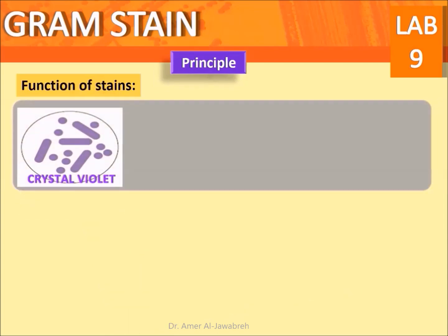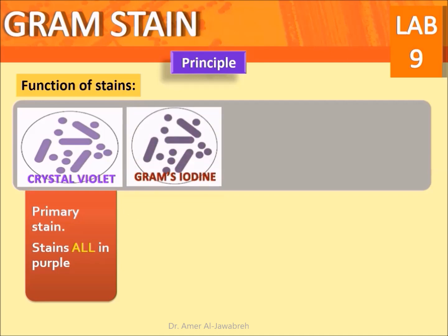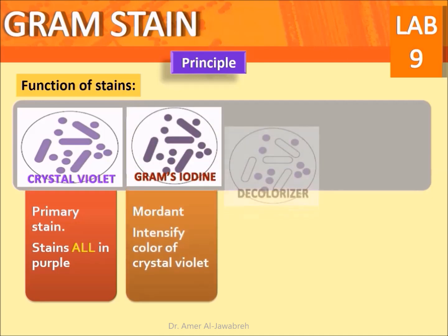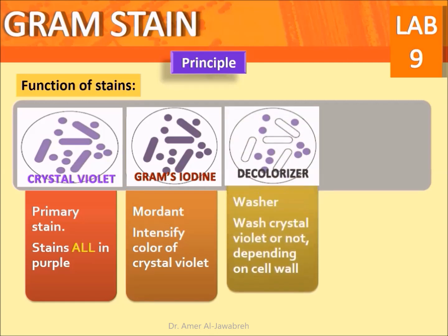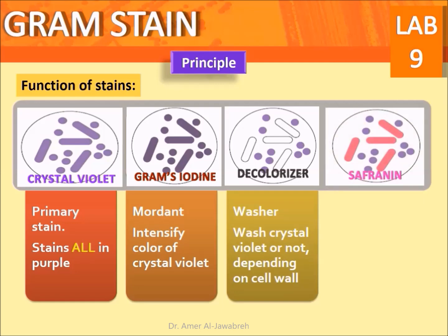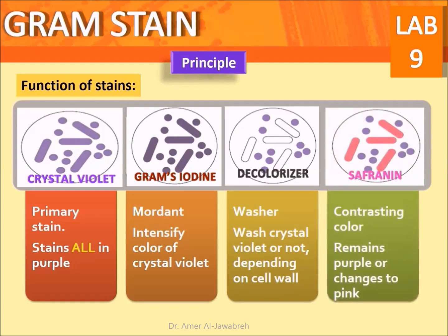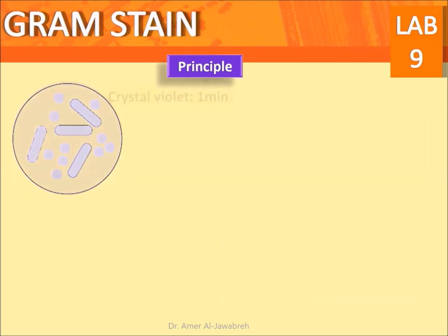Crystal violet is the primary stain — it stains all bacteria purple. Gram's iodine acts as a mordant to intensify the color of crystal violet. The decolorizer washes the crystal violet away or not, depending on the cell wall composition. Safranine provides a contrasting color, so bacteria either remain purple or become pink depending on the composition of their cell wall.